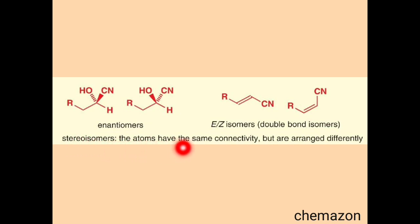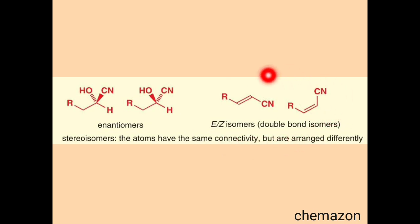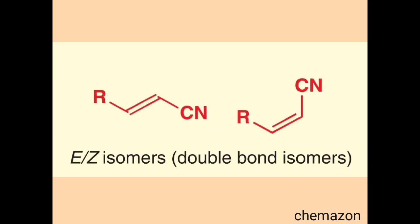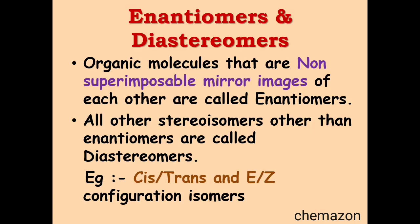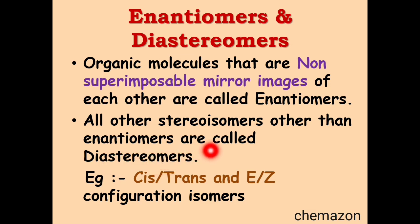So again, what are stereoisomers? They have the same connectivity but are arranged differently in 3D space. Stereoisomers are of two types: geometrical isomers and optical isomers. Examples of geometrical isomers are E/Z isomers or cis-trans isomers, which we will see later, and enantiomers or diastereomers which are known as optical isomers. E/Z isomers we will learn in a further video in much detail. All other stereoisomers other than enantiomers are called diastereomers; examples of diastereomers are cis-trans and E/Z.